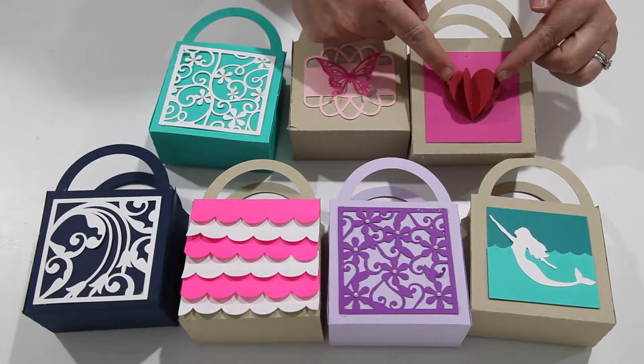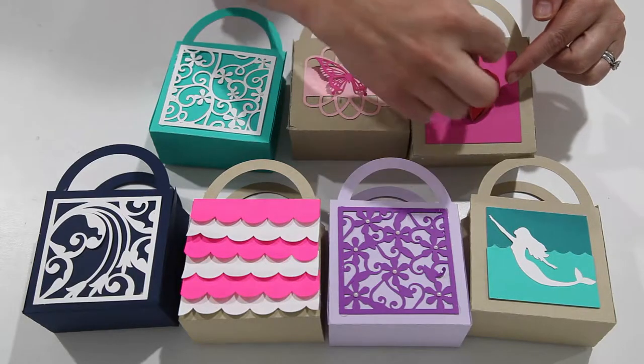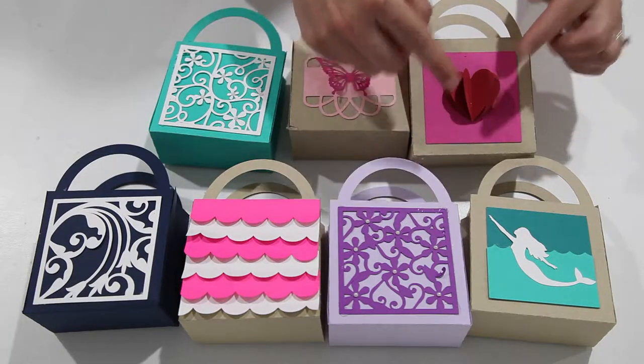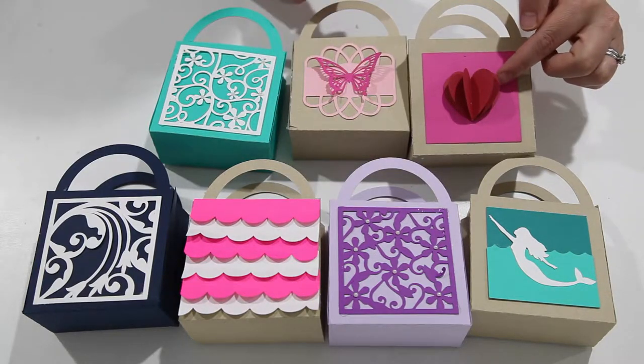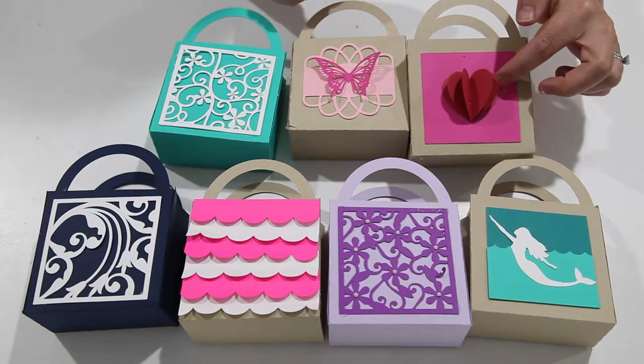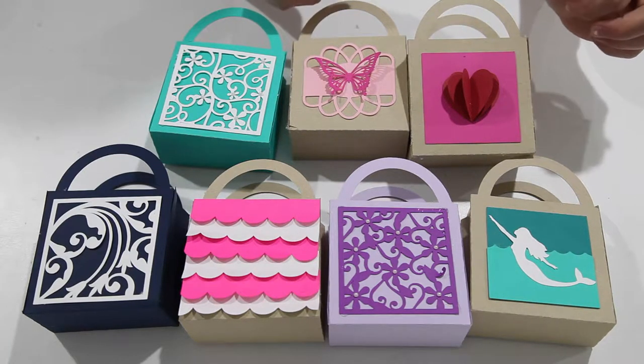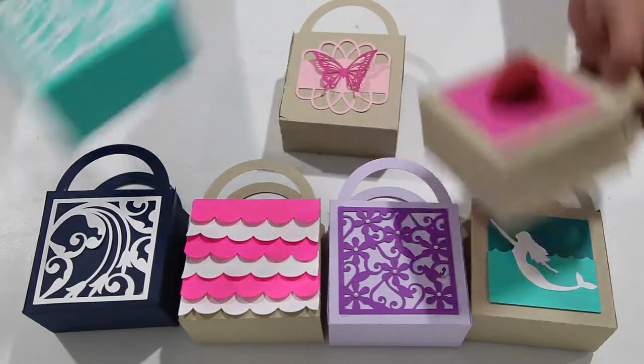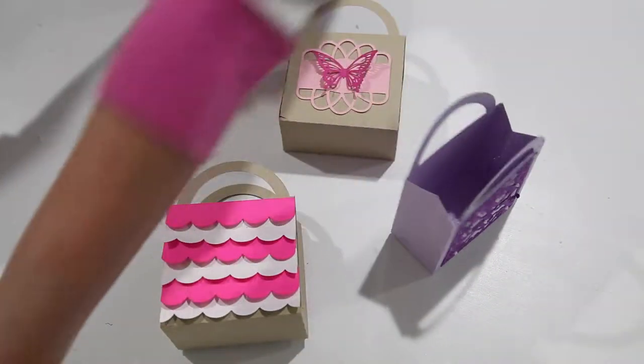For something like the heart you're just layering, putting a little dab of glue right down the middle and then layering those three hearts together. The last one at the bottom you're going to glue to the actual favor box. So let me show you how to put together one of these. They're pretty quick and fast.